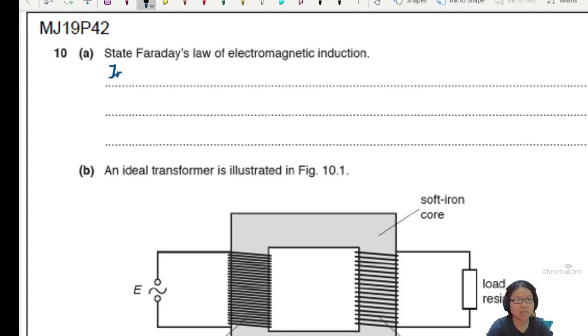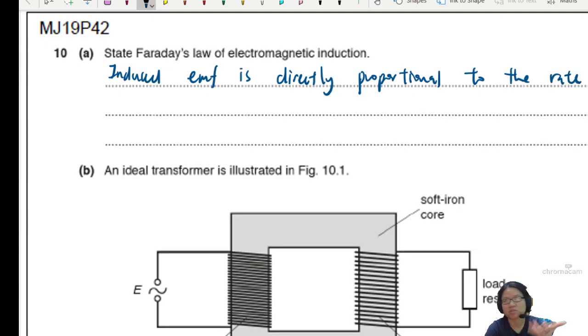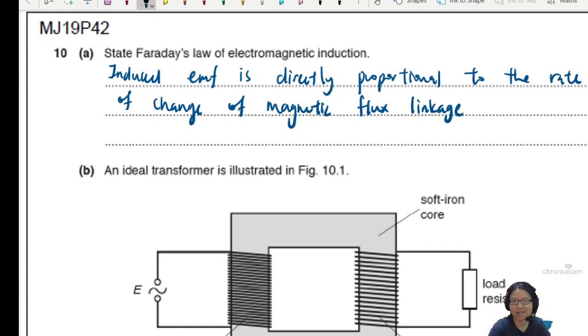State Faraday's Law of Electromagnetic Induction. So you will say the induced EMF is directly proportional to the rate. This one is roughly already one mark. Then you can say rate of change of magnetic flux linkage.